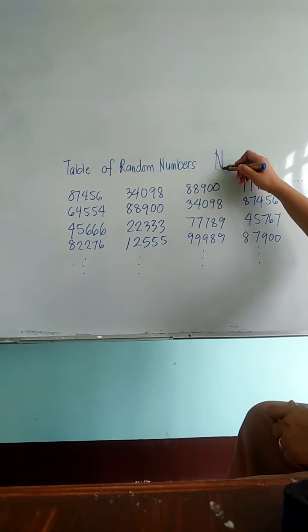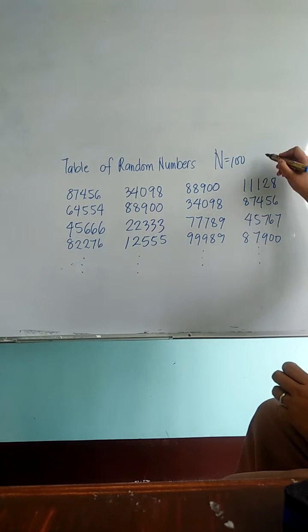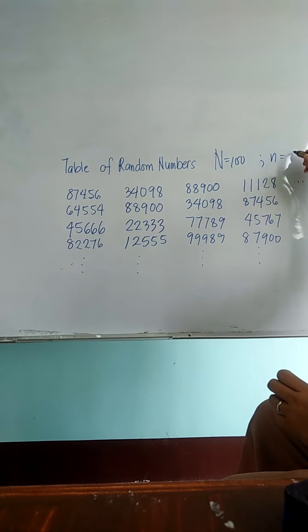If you have a population of 100, and you want to get a sample of 10, you are going to use the digits in the table of random numbers.